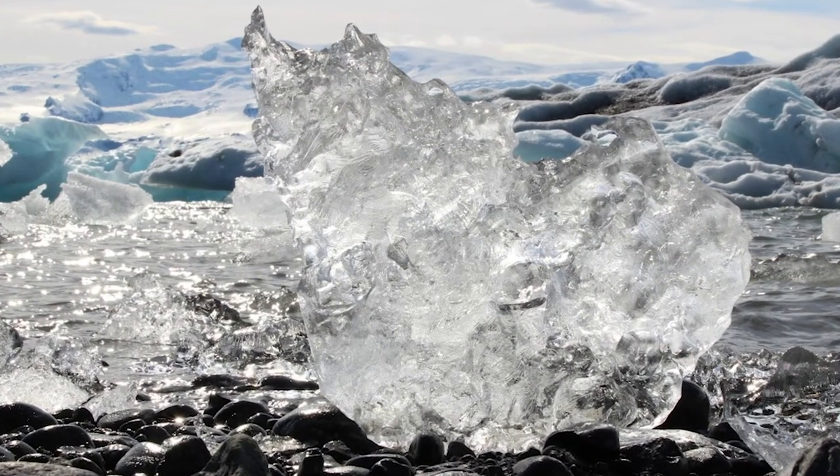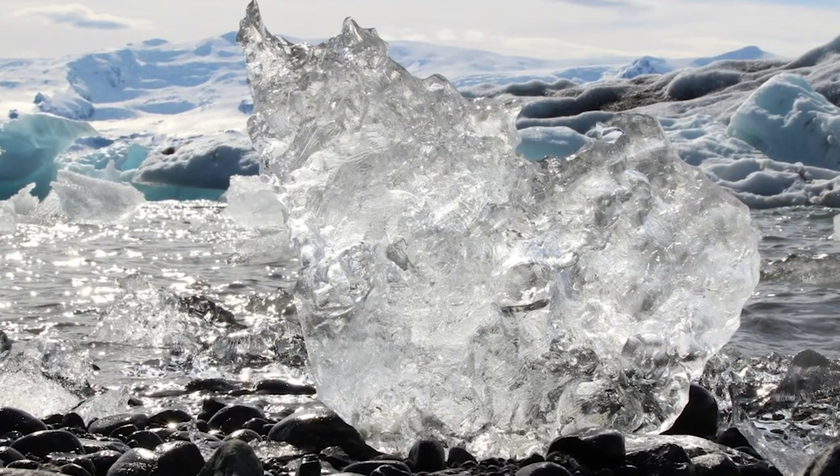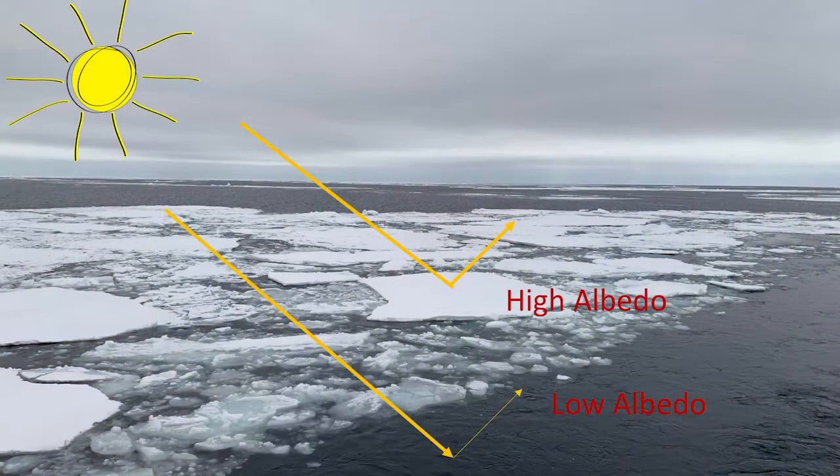Ice is highly reflective to incoming solar radiation with about 60 percent of the light being reflected. Snow is even more reflective with 95 percent reflected — the albedo is simply the fraction of reflected sunlight, for example 0.95 for fresh snow. However, open water absorbs about 94 percent of the incoming heat with only six percent reflected. This makes the Arctic ice pack very sensitive to the amount of open water, or open water fraction, and leads to the important ice-albedo feedback that contributes to rapid late summer ice melt.